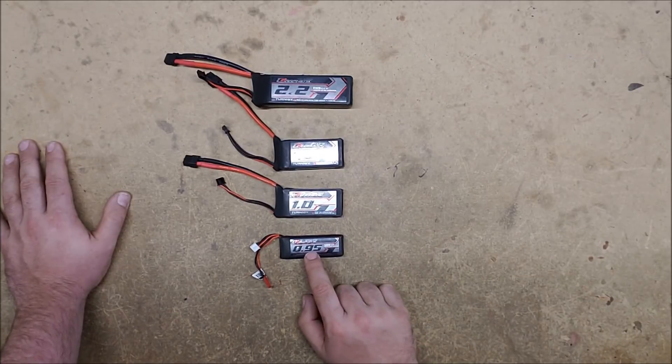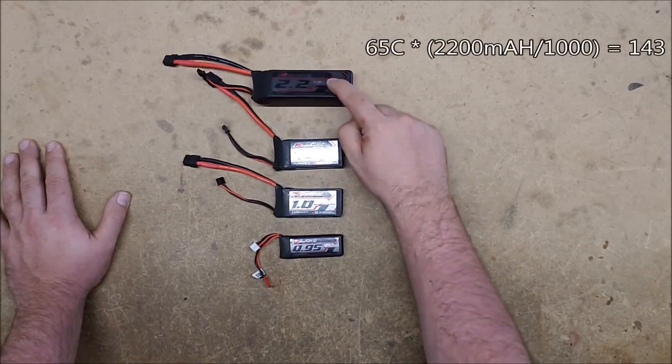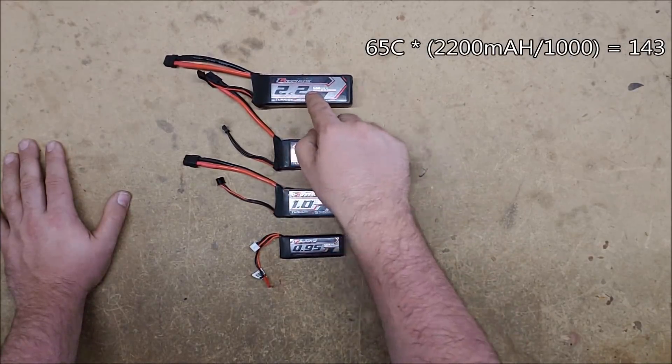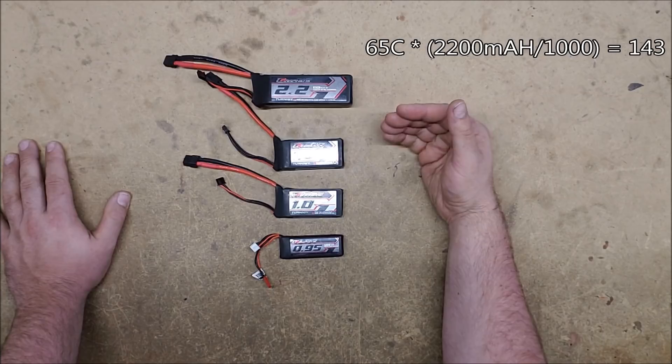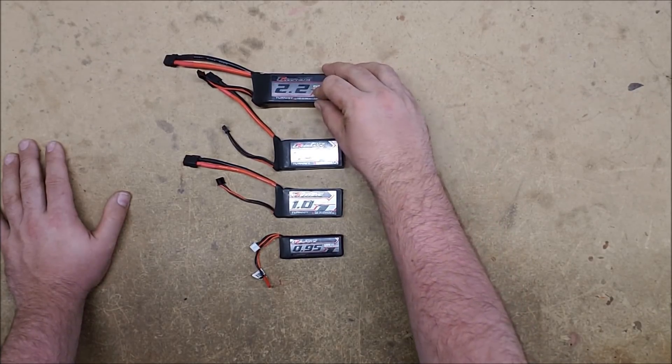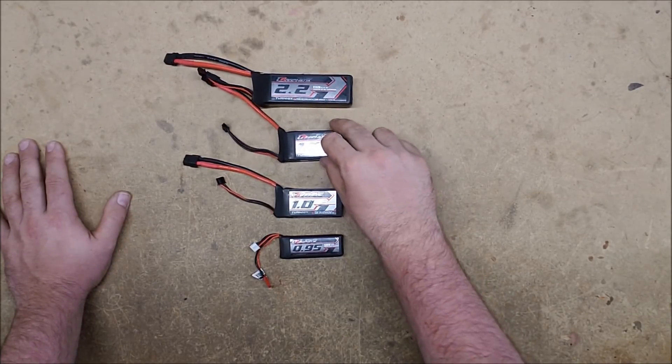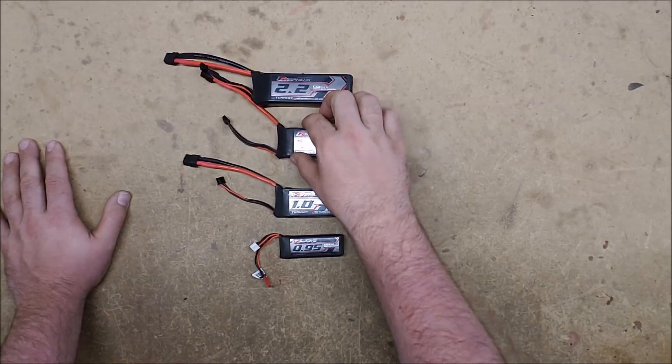This one's less than one. It's 0.95. So it comes out to about 61. And this one is 2.2. So it's more than double 65. And it actually comes to about 143. So this one can power a lot more motors at the same time than this one could. But they're the same voltage. And they have different capacities.